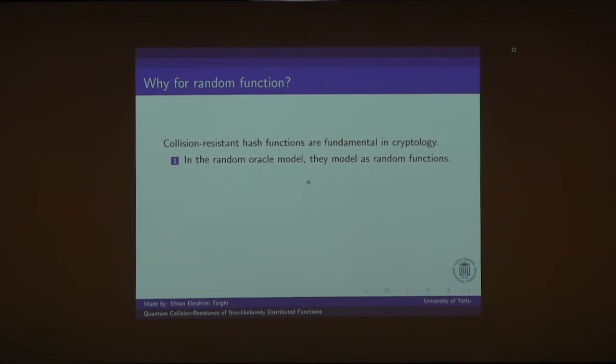To recall, in the random oracle model, every party, including the adversary, has oracle access to a public function. And in the security proof, we consider that function as a random function. And then security relies on the fact that finding a collision for that function is difficult.